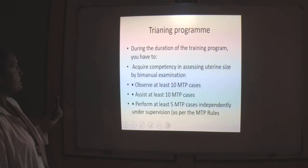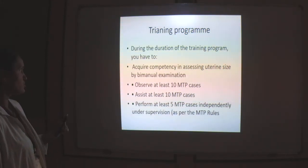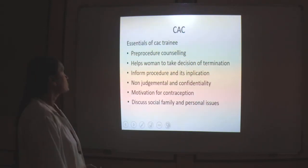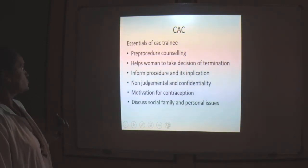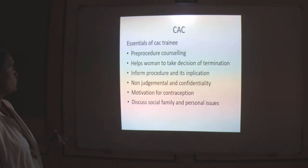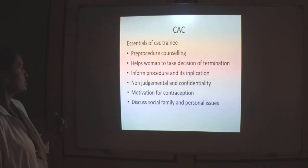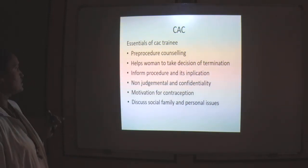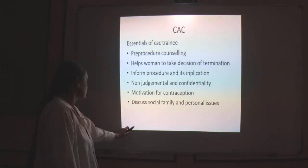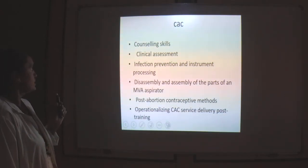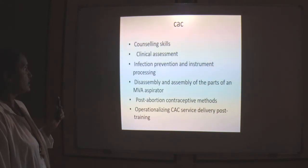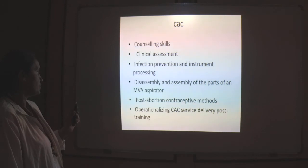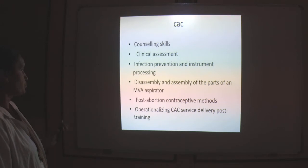In the training program, the trainee has to acquire competency in assessing uterine size by bimanual examination, observe at least 10 MTP cases, assess at least 10 MTP cases, and perform at least 5 MTP independently under supervision. The essentials of comprehensive abortion care training: the trainee should be able to do pre-procedure counseling, help the woman make the decision for termination, inform about the procedure and its implications, maintain confidentiality, motivate for contraception, and discuss family, social, and personal issues. They also require counseling skills, clinical assessment, infection prevention and instrument processing, and should be able to assemble parts of the MVA syringe and give post-abortion contraceptive method advice.